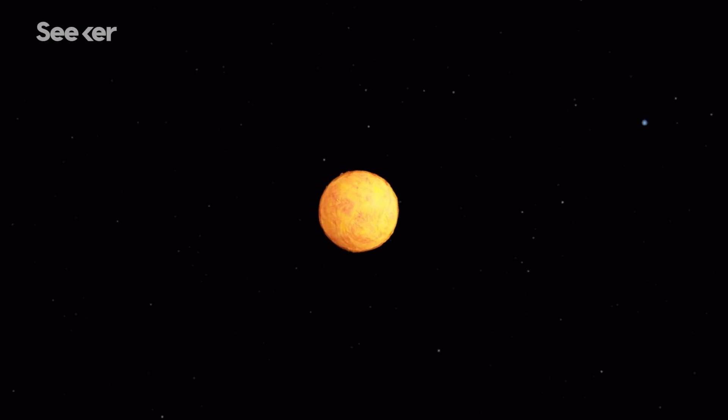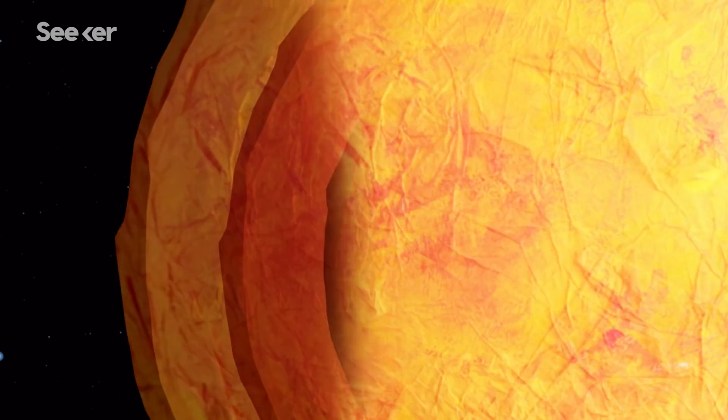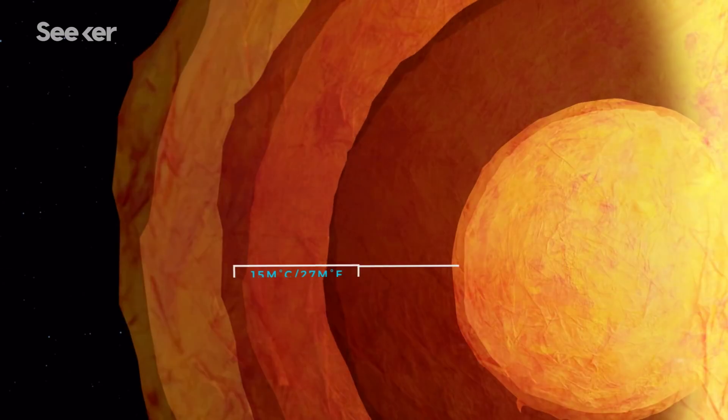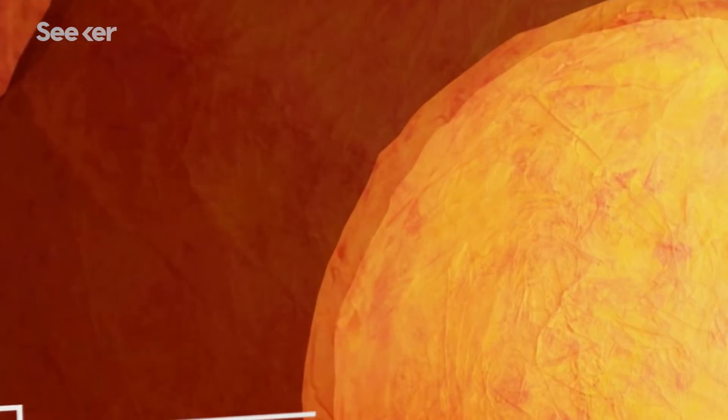The Sun produces more energy than we can comprehend. Its core reaches a predicted temperature of 15 million degrees Celsius, or roughly the same temperature as an exploding hydrogen bomb.